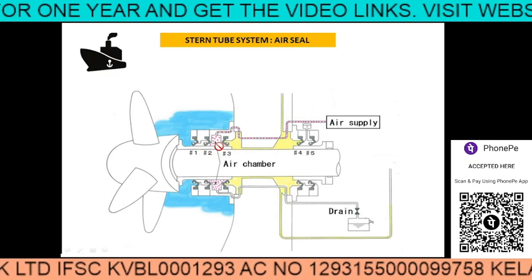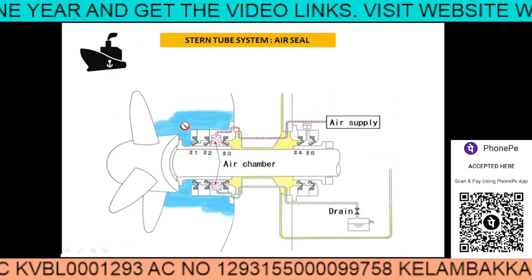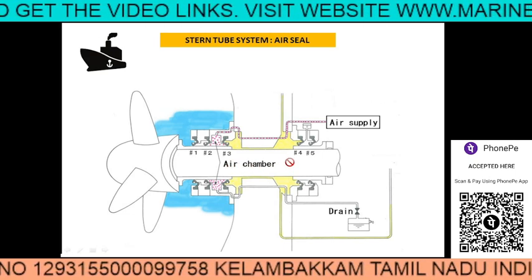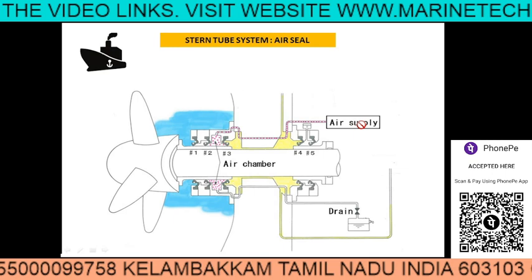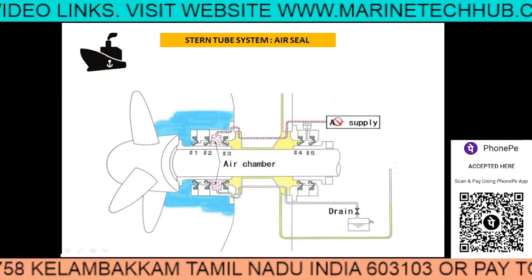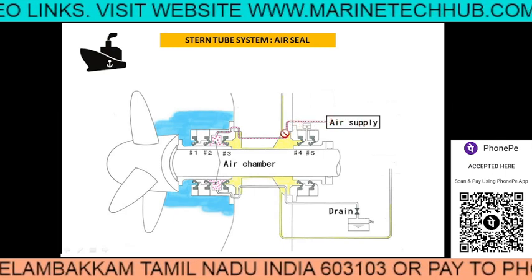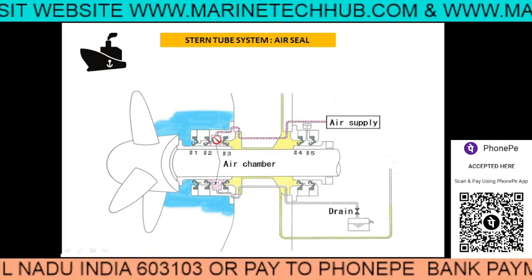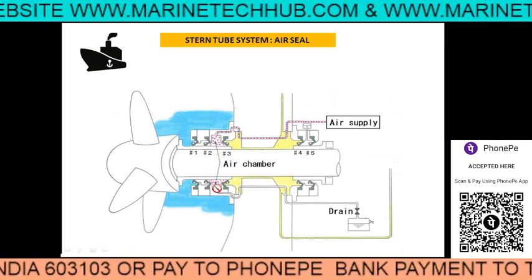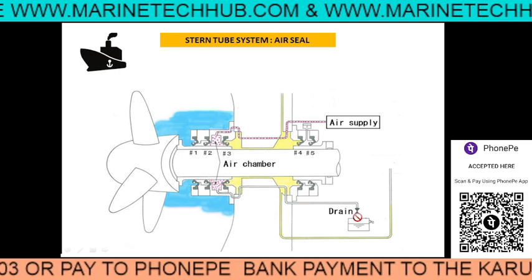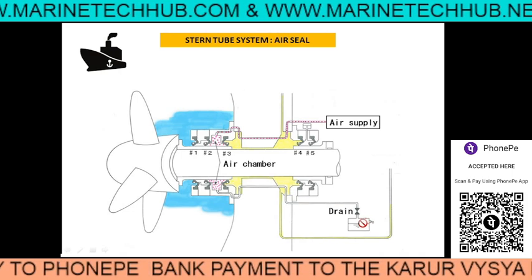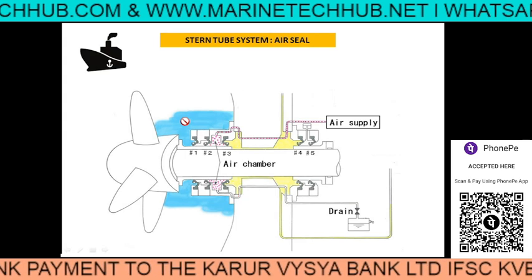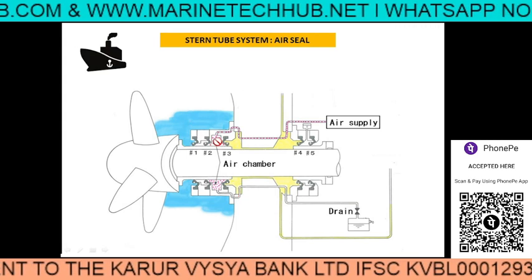These sealing rings protect from sea water coming inside. What we are going to do is supply air as a continuous flow into this chamber. You can see here — this air will come out and drain here continuously. So if there is leakage of sea water, it will come here.